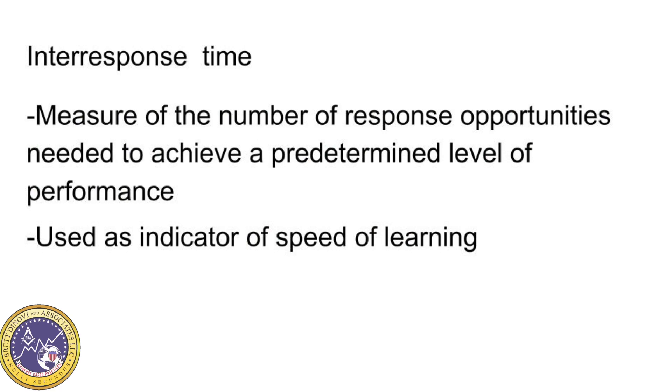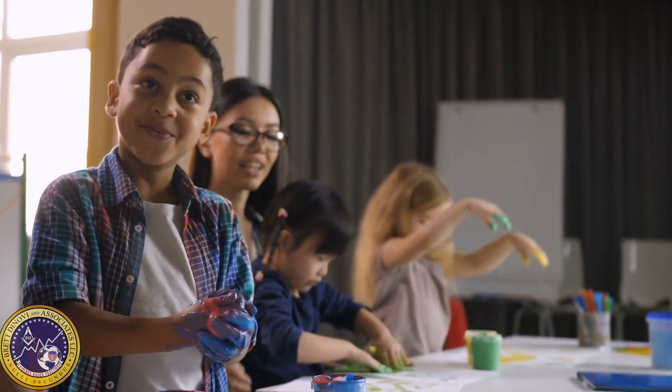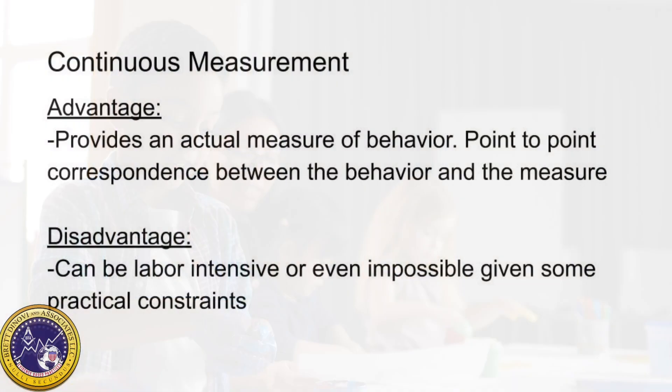The time from a reinforcer to the next response is a latency and not an inter-response time, even if the reinforcer is response produced. Inter-response time is a measure of the number of response opportunities needed to achieve a predetermined level of performance, and it's used as an indicator of the speed of learning. Trials to criterion measures how long a student takes to begin performing a particular behavior once it's been requested.